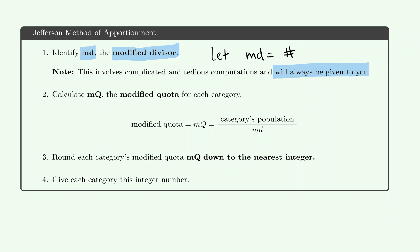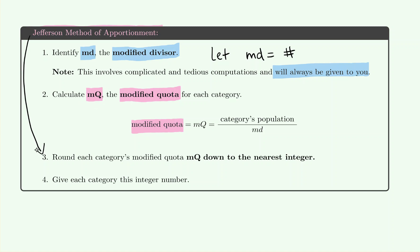The next thing we do is find and calculate the MQ — the modified quota. To find the modified quota, you take the category's population and divide it by the MD, the modified divisor identified in the problem. Once you've calculated the MQ, it may be some kind of decimal value, so you calculate all of the MQs for each category.